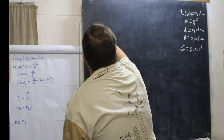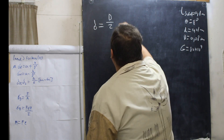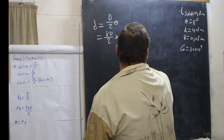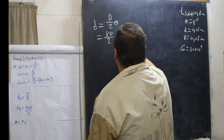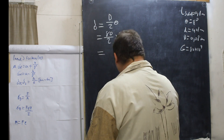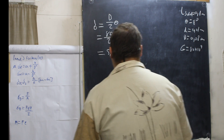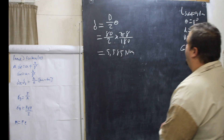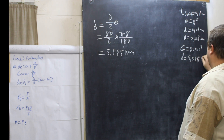First things first — the load applied. The deflection symbol is δ = D/2 × θ, which equals 0.08/2 times θ. θ is 8 degrees, which is π×8/180, giving us a deflection of 0.005585 m, so δ = 5.585×10⁻³ m.